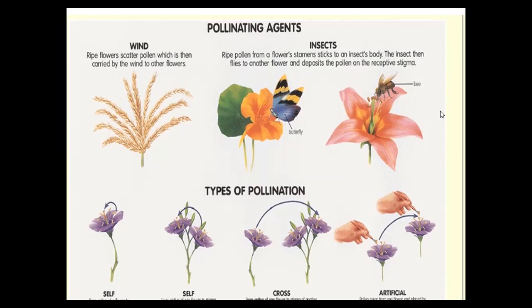The best example of hydrophile pollination is aquatic plants. The best example for wind pollination, anemophile, is maize or corn. Biotic pollination includes insect pollination, done by bees, butterflies, wasps, and other insects. This type of wind and insect pollination is classified accordingly.